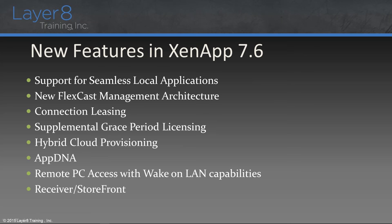We've got supplemental grace period licensing, which is a new feature. This differs from the standard 30-day period in that grace period licensing allows you to technically exceed the number of licenses in your system. For instance, if you had 100 users using all 100 licenses and you added 10 new employees, the grace period licensing would allow you to add those employees and create the HDX connection for 15 days. We've also got some hybrid cloud provisioning where we can provision controllers in the cloud — Amazon or the Citrix cloud. AppDNA is a very nice tool for rolling out applications to users and testing them first. The latest version of AppDNA has included Windows 10 functionality, so you can start checking and testing applications for a Windows 10 environment.